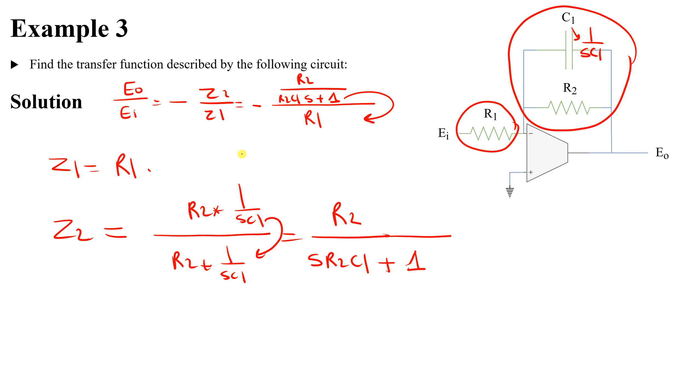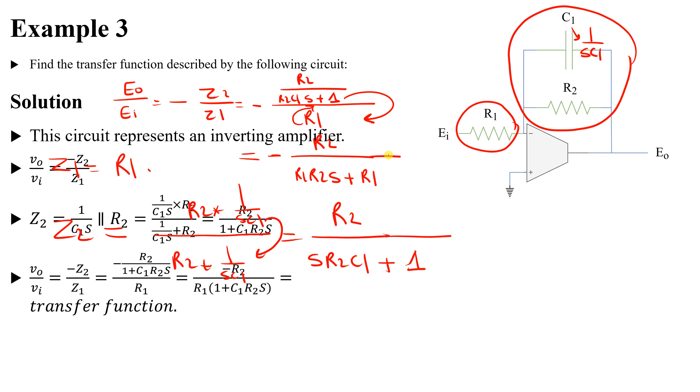So we will type it here: equal to negative R2, take R1 multiplied by all of this factor. So it will be R1R2Cs plus R1. As you can see here, you can see negative R2 divided by R1. Let's take R1 as a common factor: it will be 1 plus R2s. However, we forgot just one element here, C1.